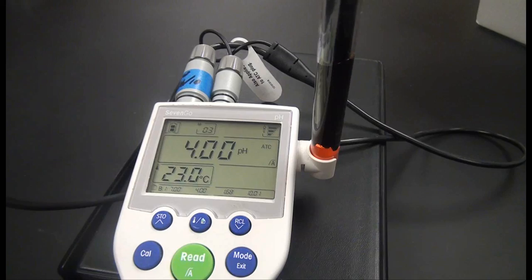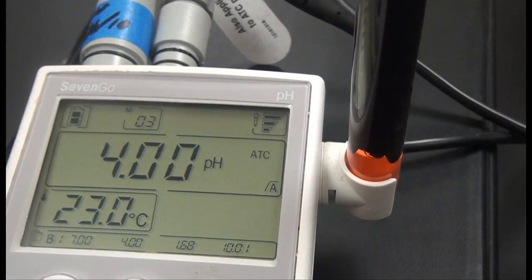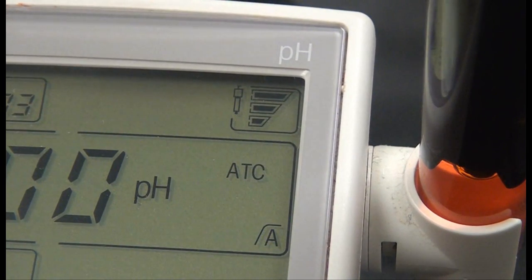The 7-go-pH meter continuously measures electrode condition. A bar indicator on the upper right of the meter display screen shows the current electrode condition. When the graphic displays three bars, the unit is in good condition. At two bars, the electrode is in need of cleaning. And one bar indicates the electrode is faulty and in need of replacement.